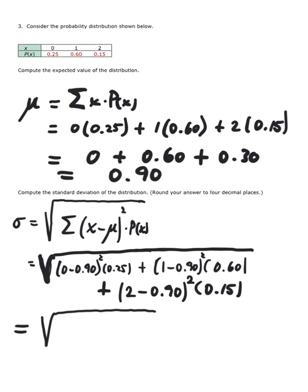Plus, parentheses 2 minus 0.90, closed parentheses squared. You type it in just as it's written. Times 0.15. Alright, so I get 0.39 under the radical. Now, that's without the square root. And then if I square root that answer, I get 0.6245. That's rounded to four decimal places.